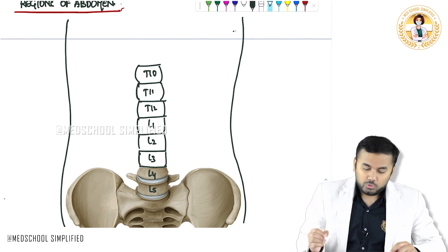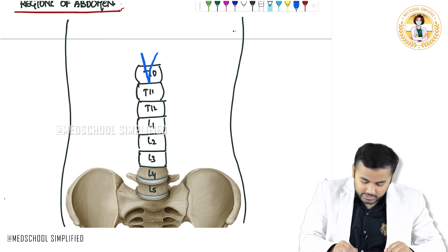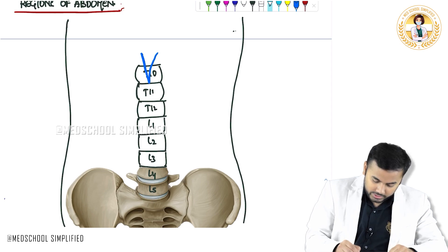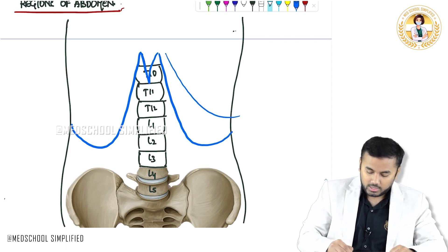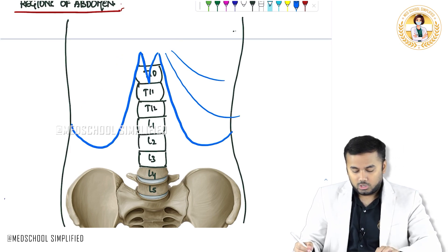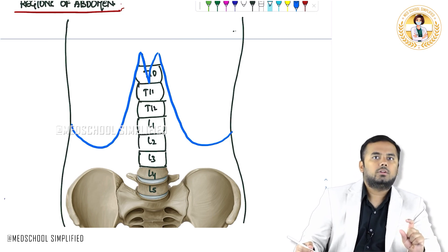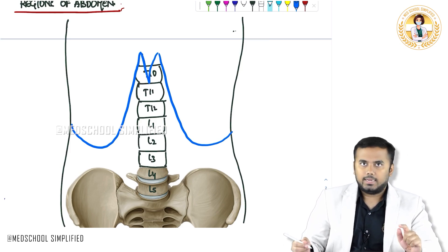So this is L1 vertebra, and just below L1 you have got T12. Then you have got T11, then T10. Now here is the hip bone region. You know you have got the xiphoid process — at the level of T10, this is your xiphoid process. And this is your costal margin all the way like this. Both sides you have got ribs — so this is your costal margin. In textbooks the xiphoid process is given at the level of T9, but as per the picture it is at the level of T10.